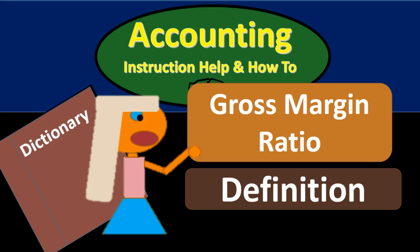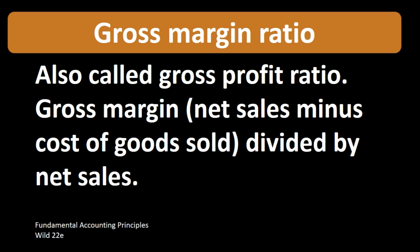In this lecture we're going to define gross margin ratio. According to Fundamental Accounting Principles, 22nd edition, the gross margin ratio — also called the gross profit ratio — is defined as net sales minus cost of goods sold, divided by net sales.